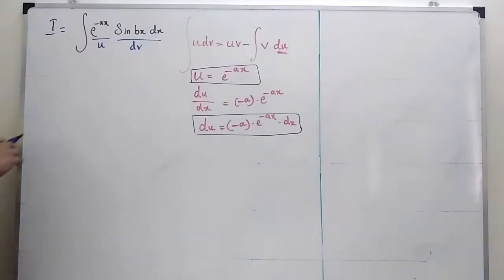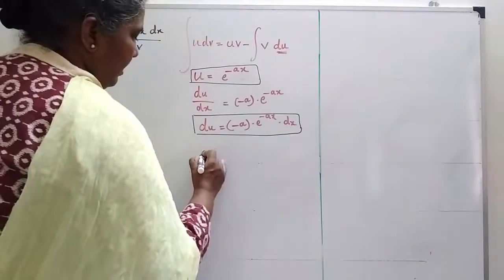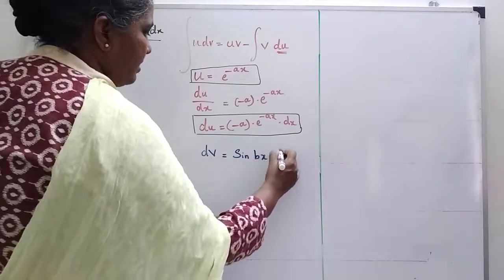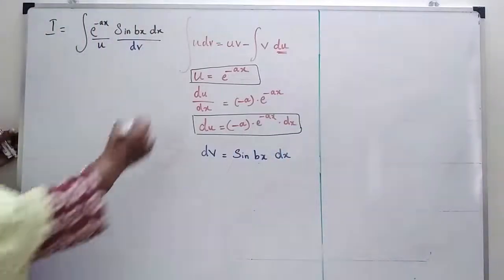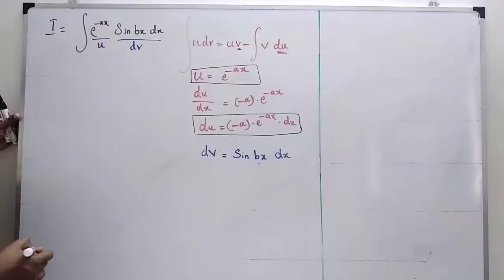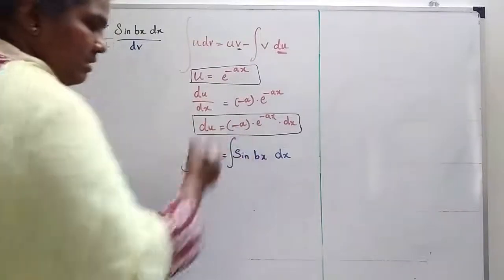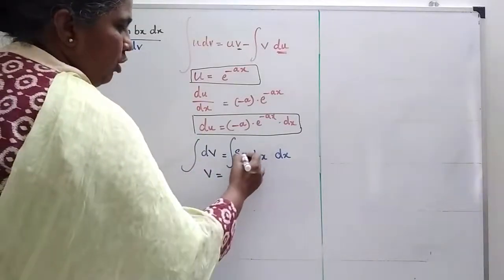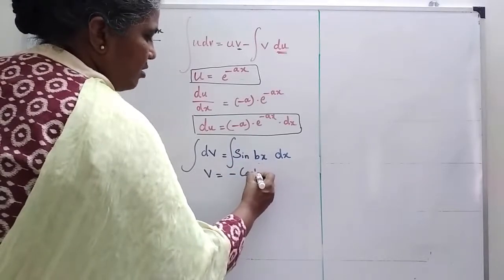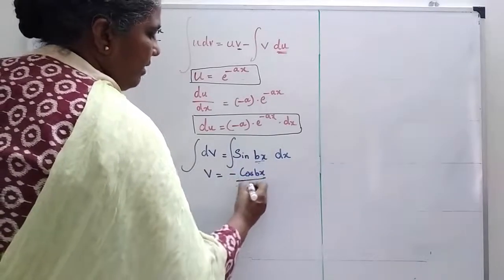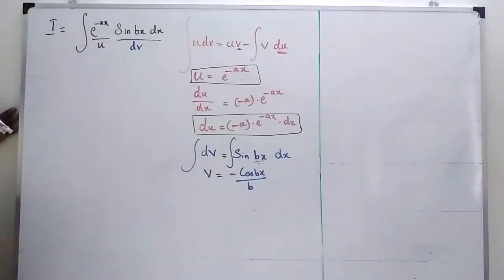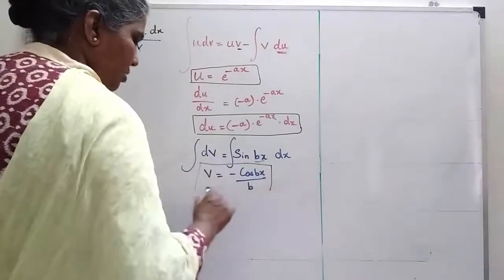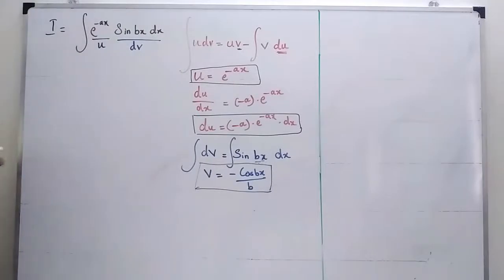Now for dv: dv is equal to sin bx dx. I need v, so I integrate both sides. The integral of sin bx is minus cos bx, so v is equal to minus cos bx by b.